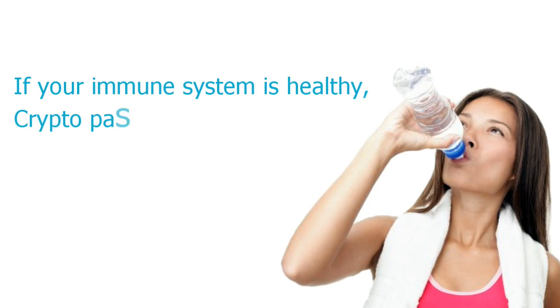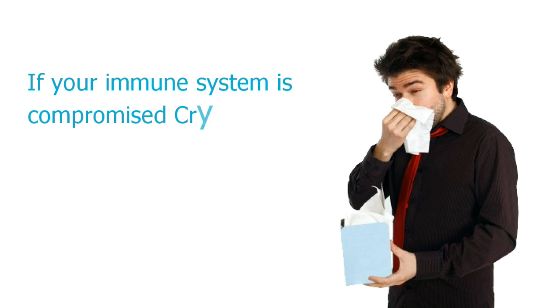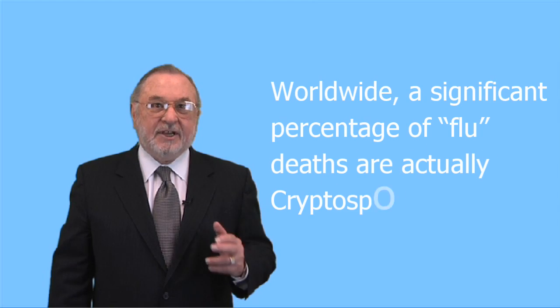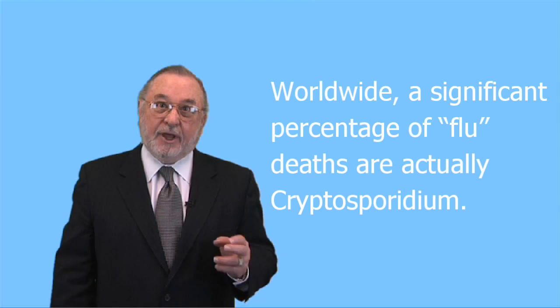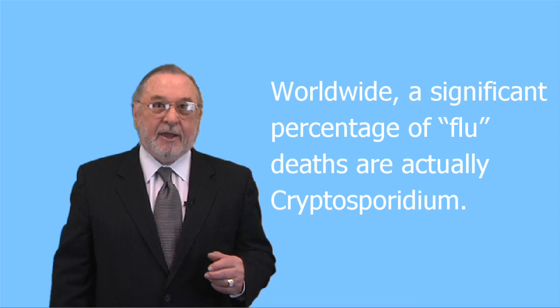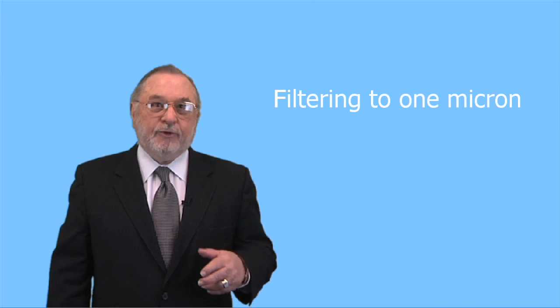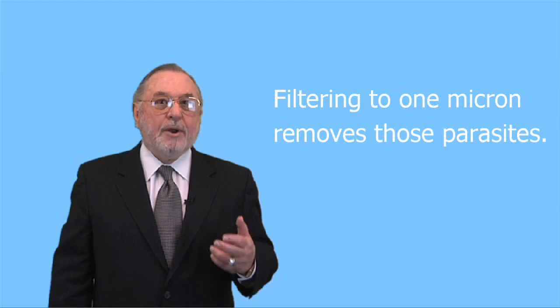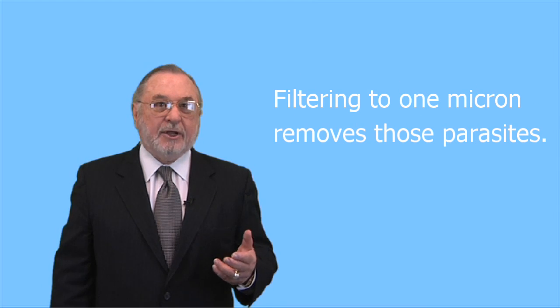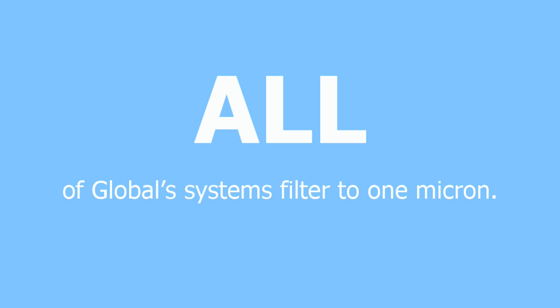If your immune system is healthy, Cryptosporidium passes right through. If your immune system is compromised, crypto can attack — it gives off the same symptoms as the flu. Worldwide, a significant percentage of flu deaths are actually Cryptosporidium. Filtering to one micron removes those parasites, and all Global systems filter to one micron.